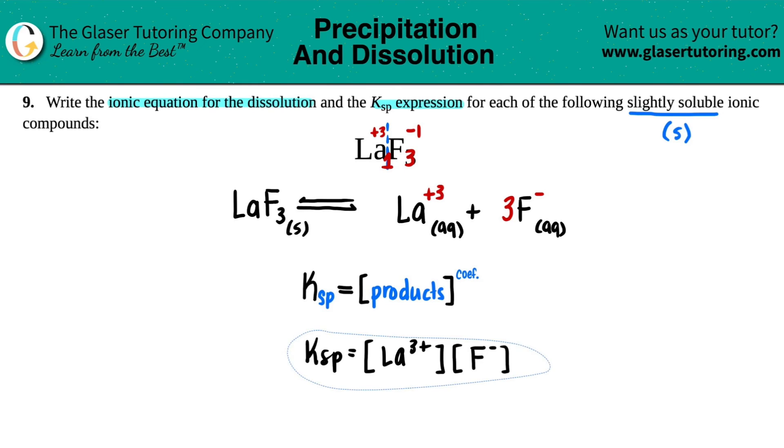But now one last thing is that with KSP expressions, just make sure that you have to raise them to their coefficients. There was only one La. So I could raise it to the first, but anything raised to the first is itself. But for the fluorine, there was three fluorines. So you have to raise that to the third. And now that is the final KSP expression.